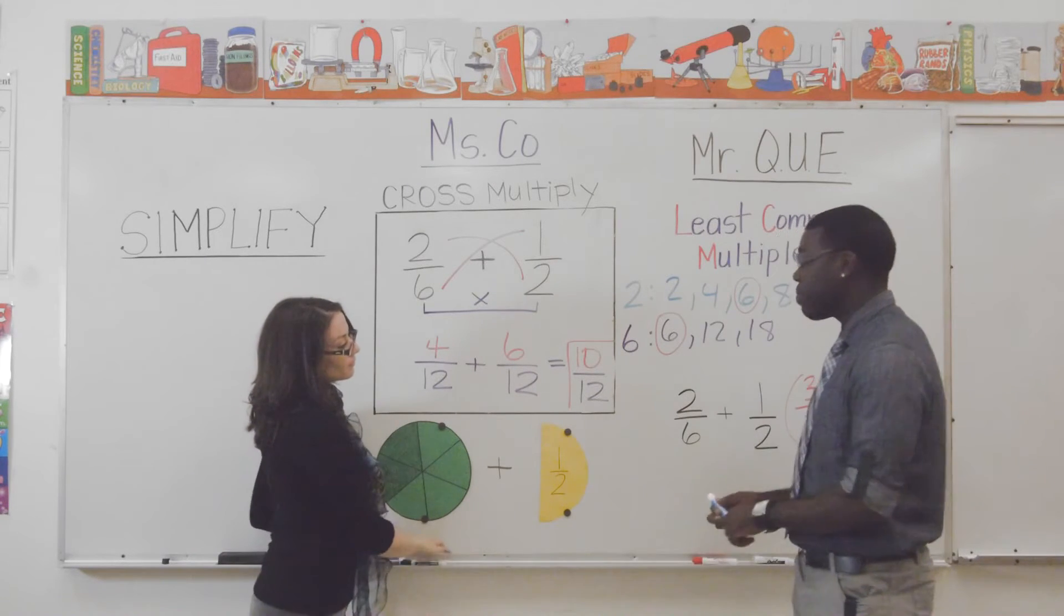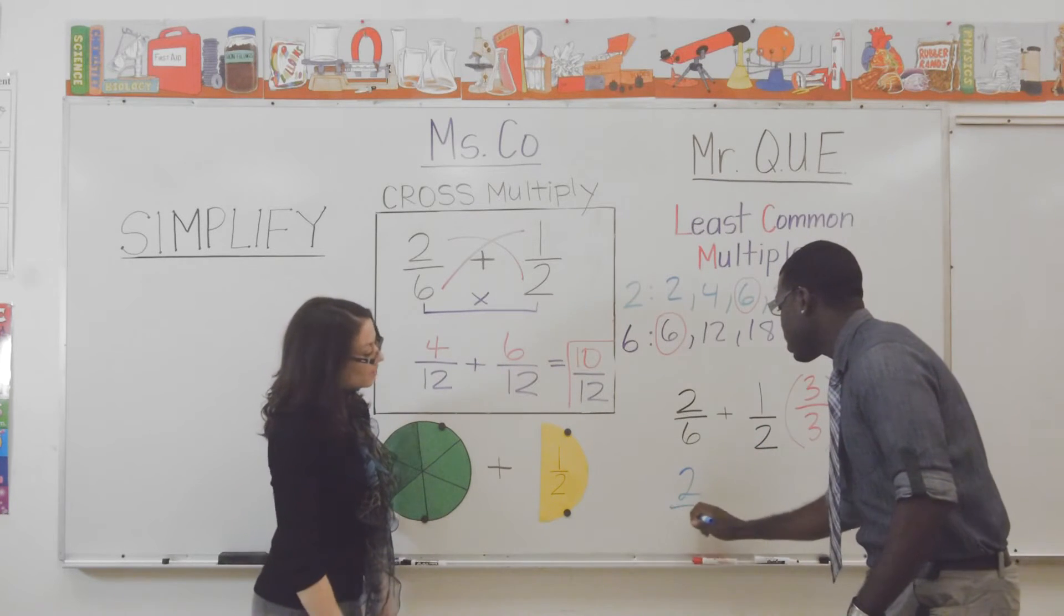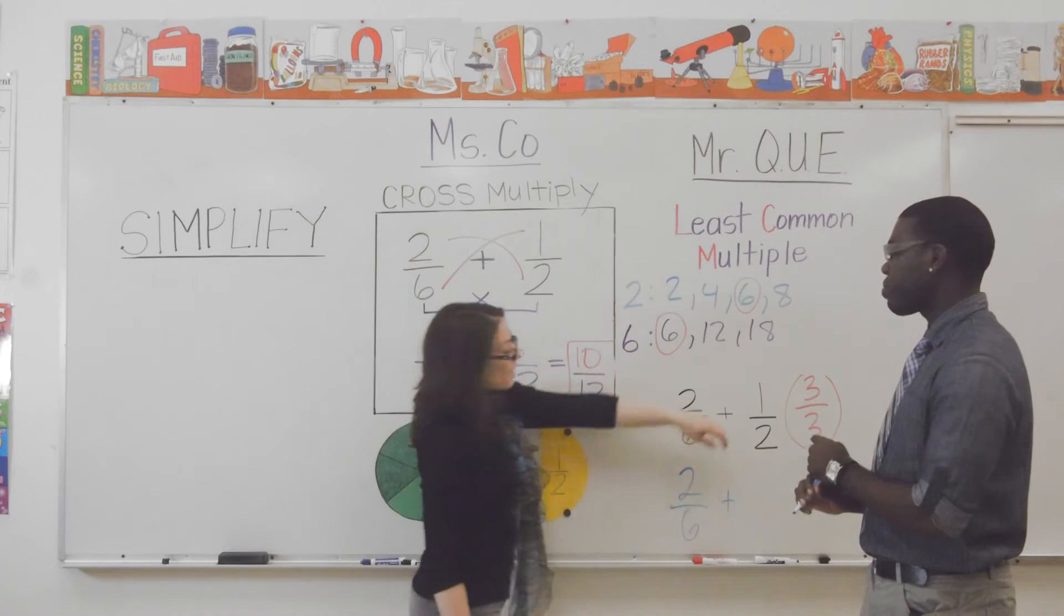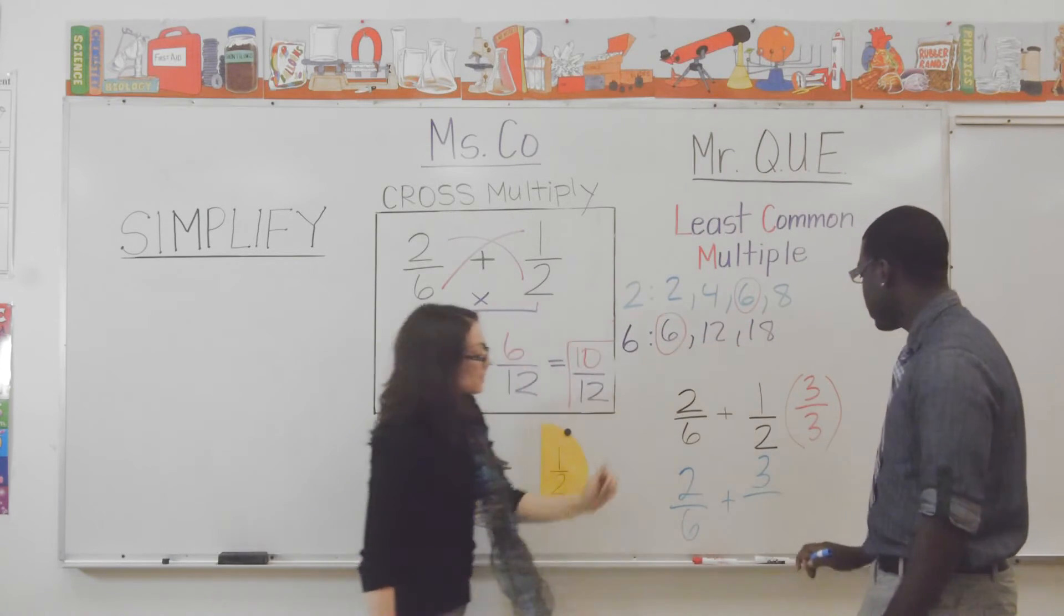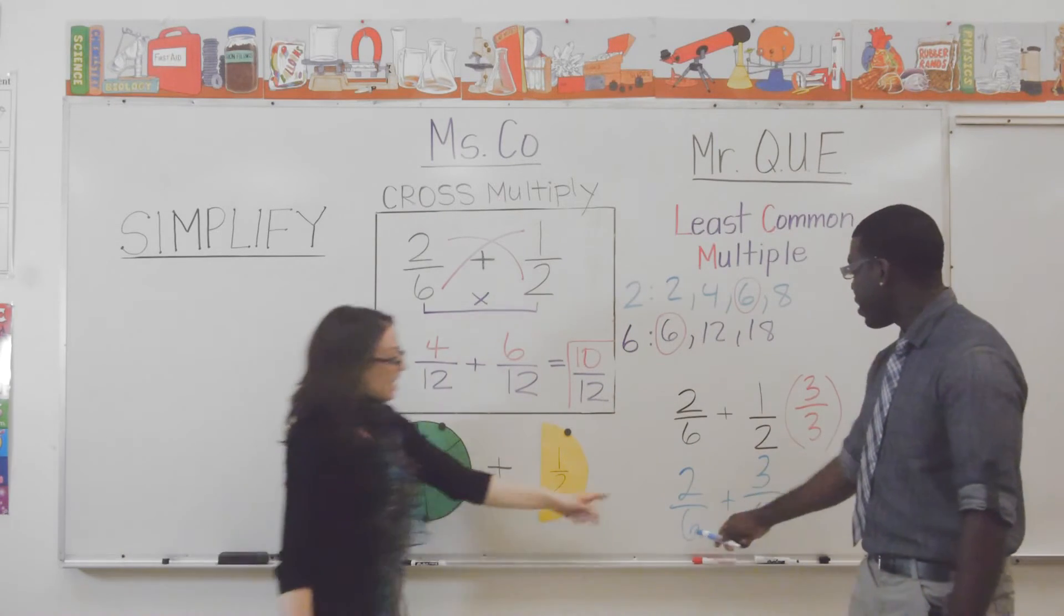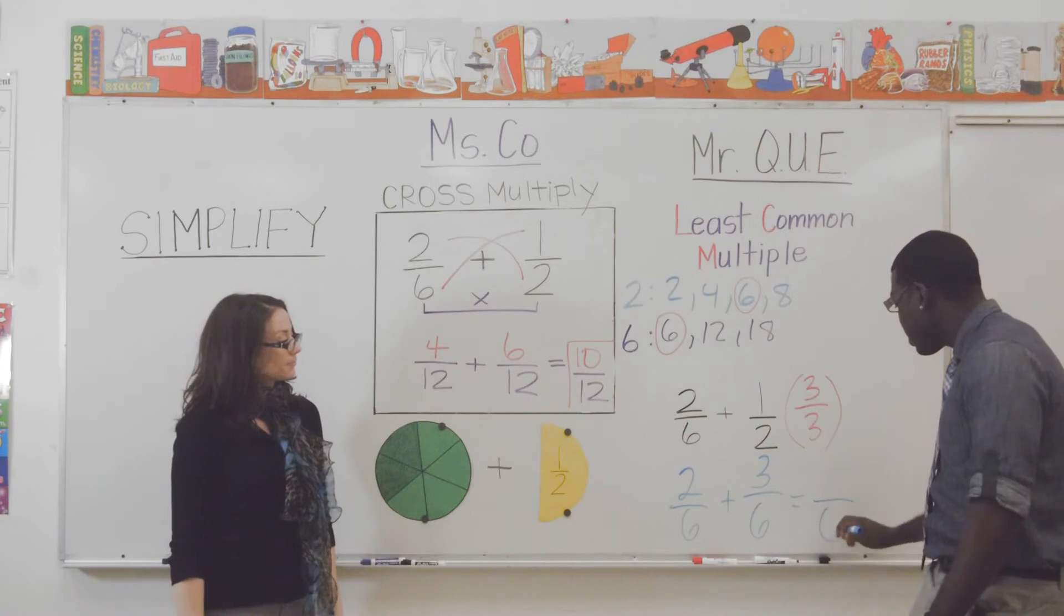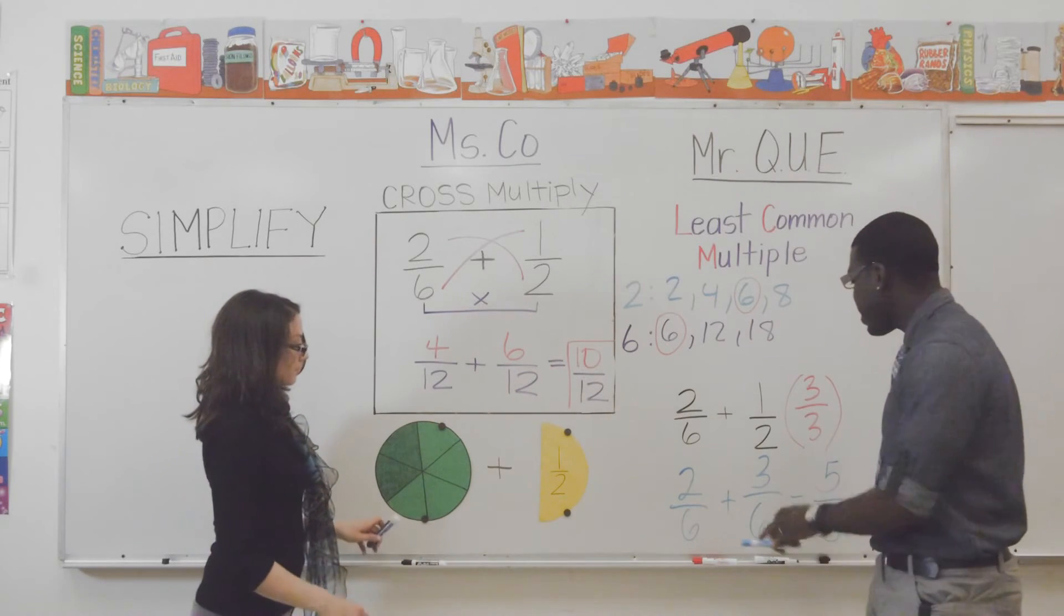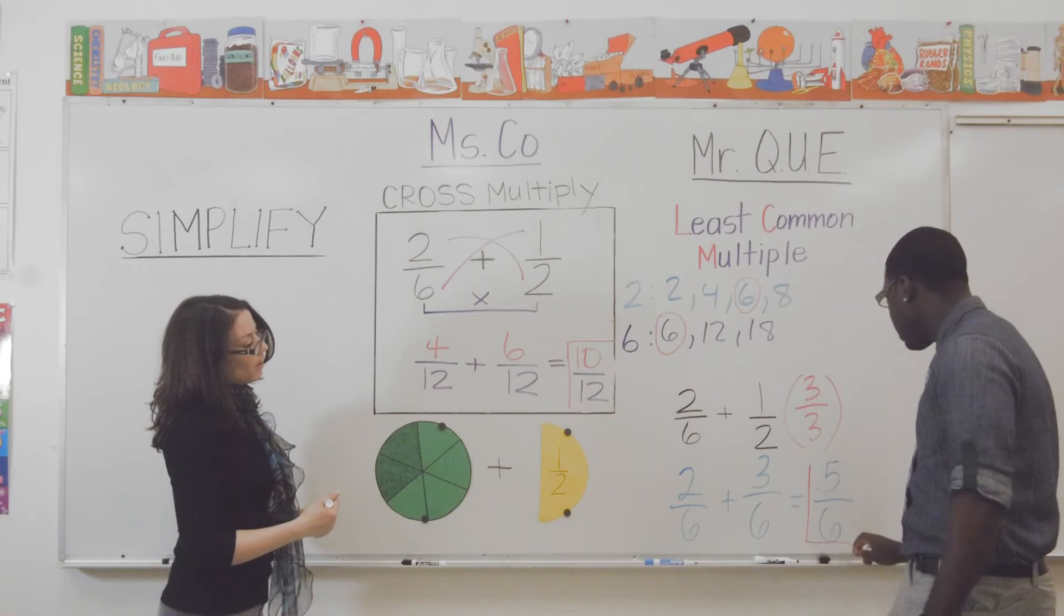This is going to help me get the least common multiple. So, now, let's rewrite this fraction. First one is going to stay the same. Two sixths. And now, can you tell us what this fraction is going to change? Okay, one times three is three in the numerator. Two times three. Now, what do we notice? Same, same, same. So, my denominator here is going to stay the same. And let's add up the numerators. Two plus three is five. And now, I have my answer, five sixths.